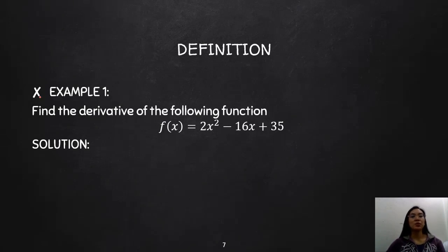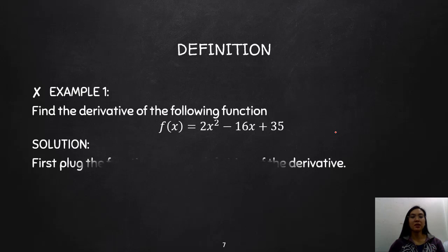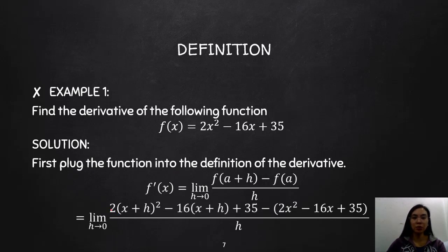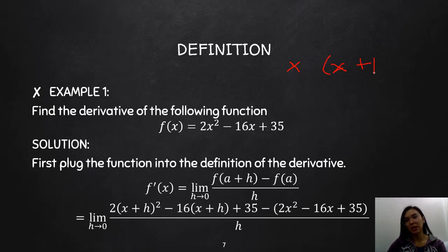Let's look at an example. Find the derivative of the following function: f(x) = 2x² − 16x + 35. First, we plug the function into the definition of the derivative. For each x in the function, we substitute x+h — that gives us f(x+h) — and f(a) is simply f(x).